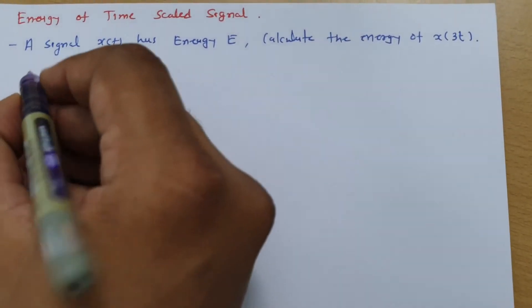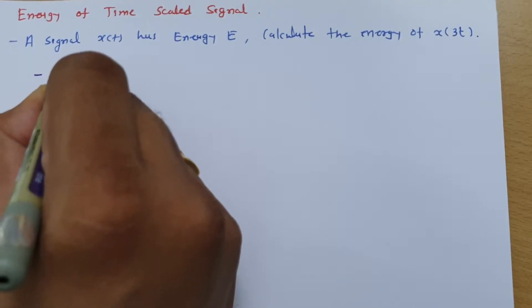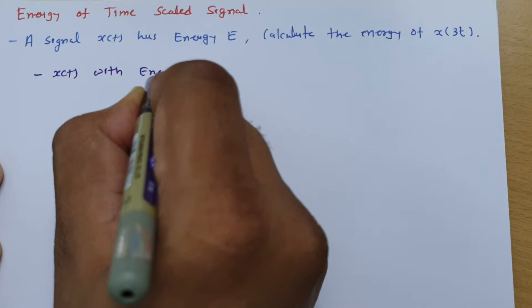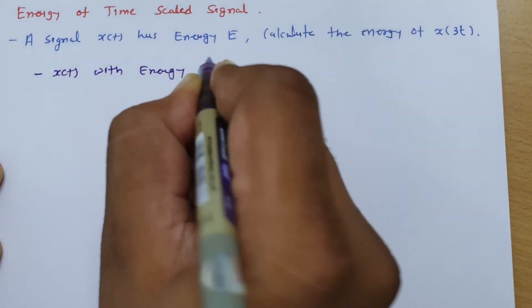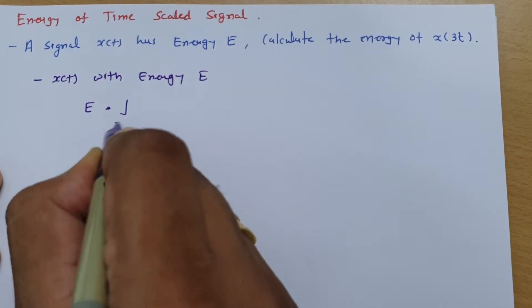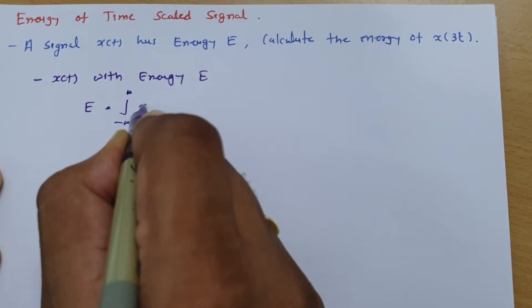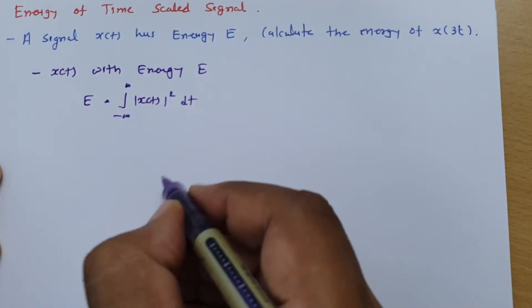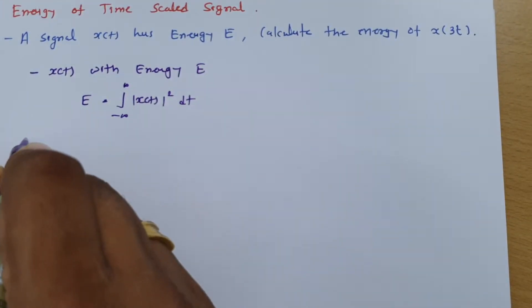So basically if you have signal x(t) with energy E, then energy of that x(t) we can calculate as integral from minus infinite to infinite of |x(t)|² dt.